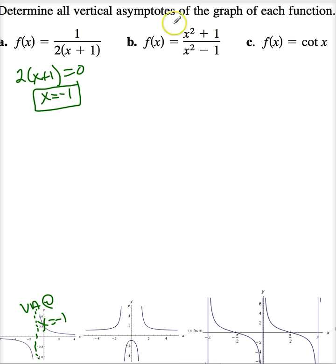Let's come to this function. f of x is x squared plus 1 divided by x squared minus 1. Again, the numerator is never 0. And so, I'm going to factor x squared minus 1 and say, where does that equal 0? Well, this is x minus 1, x plus 1.